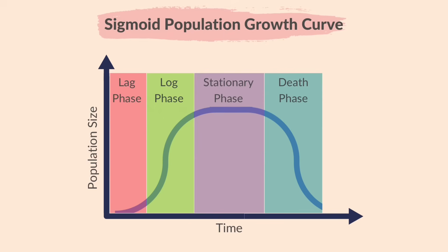The sigmoid curve represents how a population grows in an environment with limited resources. There are four main phases of growth for a population: the lag phase, the exponential or log phase, the stationary phase, and the death phase.